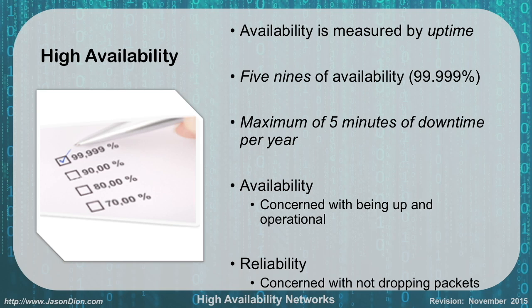High availability networks. When we talk about high availability, we are measuring our availability based on uptime — how often is the computer or network up and running and ready for us to use it. We usually talk about the five nines of availability: 99.999% availability is what we're aiming for. That means we have a maximum of five minutes of downtime per year.